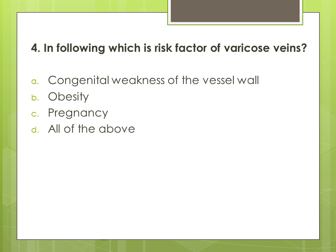Question 4: Which of the following is a risk factor of varicose veins? Options are: A. congenital weakness of the vessel wall, B. obesity, C. pregnancy, and D. all of the above. The correct answer is D. all of the above — congenital weakness of the vessel wall, obesity, and pregnancy are all risk factors of varicose veins.